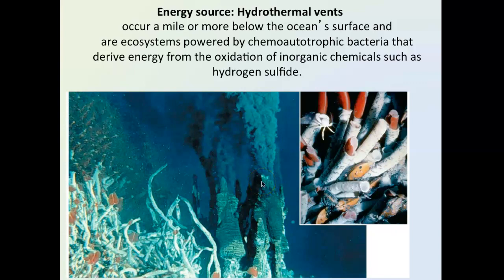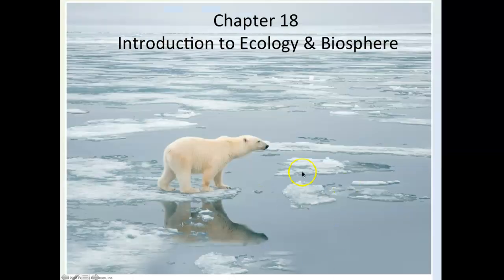Let's run through the abiotic factors. Temperature affects metabolisms for ectotherms — animals whose body temperature matches the ambient temperature. You're not going to find ectotherms in very cold climates. Think about the polar ice caps where you have polar bears — you won't have lizards and snakes there because it's too cold. Their metabolism just won't get up to a point where they can sustain life.